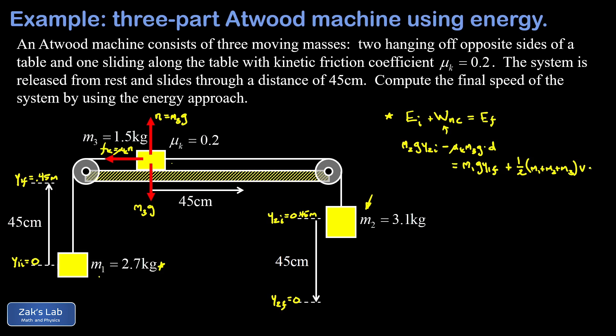At this point we'll plug numbers in. m2 is 3.1 kilograms, g is 9.8, y2_initial is 0.45. Our friction coefficient was 0.2, m3 is 1.5 kilograms, g is 9.8 meters per second squared, and displacement d is 0.45 meters. On the right we have m1 which is 2.7 kilograms, g is 9.8, y1_final is 0.45 meters, plus one half times the sum of all three masses times our unknown final velocity squared.